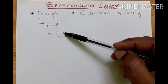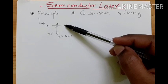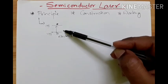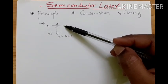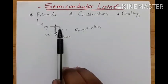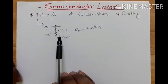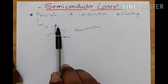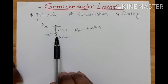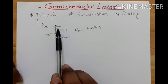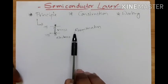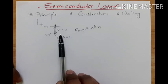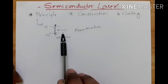Once we have excited the electrons and they sit in the conduction band, they will recombine with the holes. In semiconductors, electrons and holes are the charge carriers. When we supply energy, electrons go to the conduction band. The recombination of electrons and holes is itself the principle behind the semiconductor laser — when they recombine, it gives laser as output.